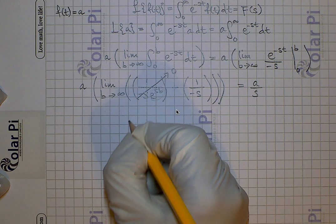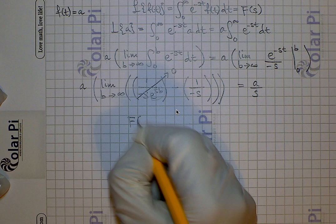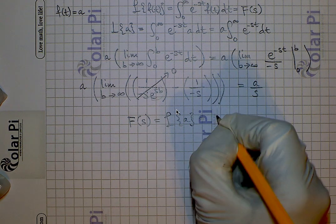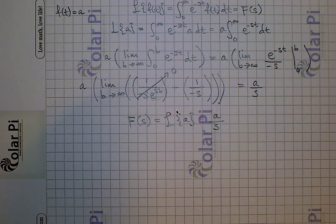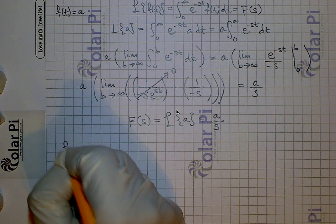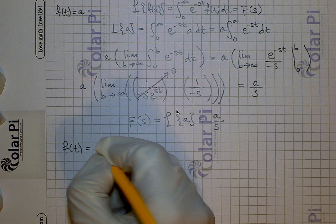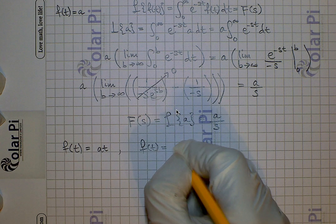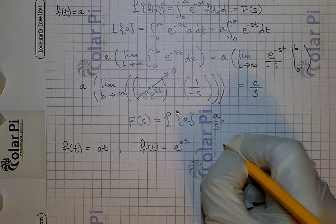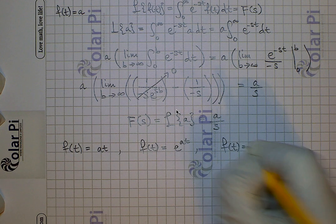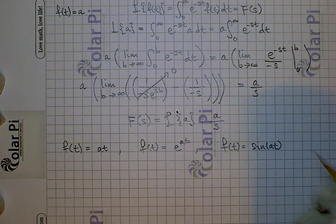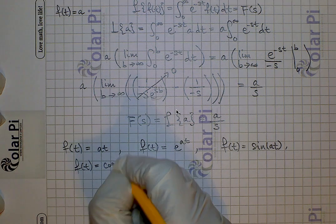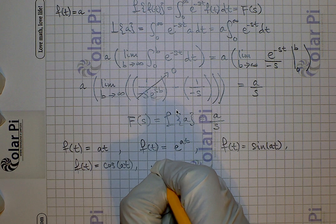Therefore the Laplace transform of f of t equals a — that is, F of s for f of t equals a — will equal a over s. This concludes this video. In the next video I'll do the Laplace transform for f of t equals at, then f of t equals e to the at, then f of t equals sine of at, then f of t equals cosine of at, and many more videos on Laplace transforms.